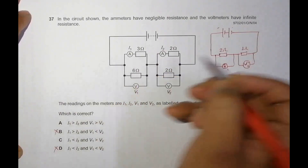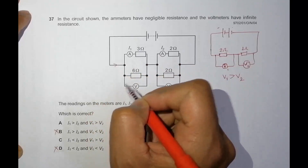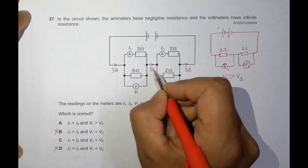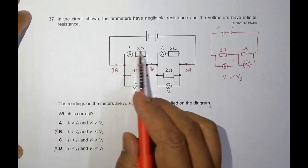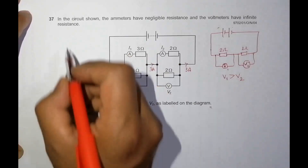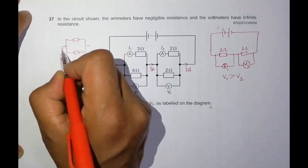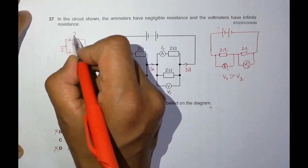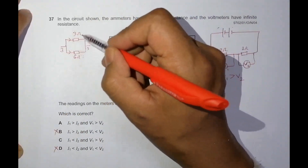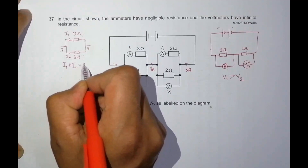Let us assume the total current is 3 amperes. This 3 amperes also flows here and here. But the current divides at the parallel branches. So for the first parallel combination — 3 ohm and 6 ohm — if this is I1 and this is I2, then I1 plus I2 must equal 3 amperes. That is one equation.